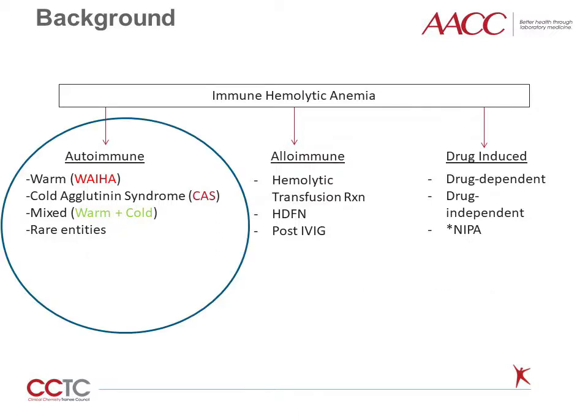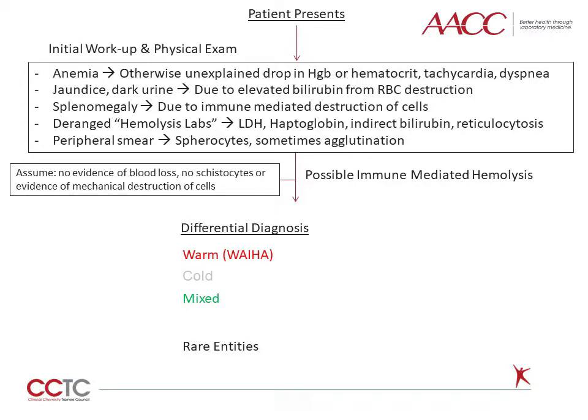In this talk, I will be focusing on the autoimmune hemolytic anemia category. The relevant entities include warm autoimmune hemolytic anemia, cold agglutinin syndrome, mixed IgG warm and IgM cold hemolytic anemia, and rare entities including IgM warm, IgG cold, and DAT-negative hemolytic anemia. One extremely important concept is that these diagnoses cannot be made based on blood bank testing alone. The positive predictive value of a positive direct antibody test, or DAT, for immune hemolysis is believed to be less than 2%. Therefore, before any diagnoses are entertained, it is crucial for an initial workup and physical exam to be supportive of immune hemolysis.